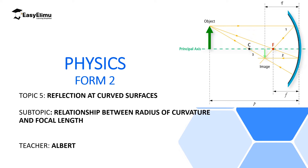Now in this lesson we are going to discuss the relationship between the radius of curvature and the focal length. We are going to realize that the radius of curvature is the distance from the pole to the center of curvature, and the focal length is the distance from the pole to the focal point.